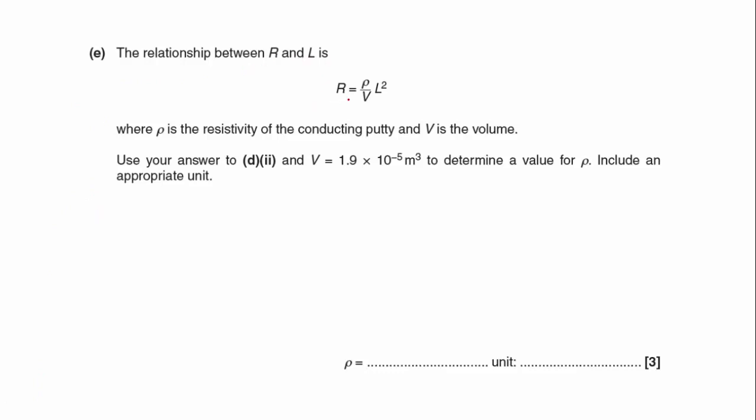The relationship between R and L is R equals rho V over L squared, where rho is the resistivity of the conducting putty, and V is its volume. So use your answer to D part 2, which was the gradient of the line, which I said was 6450 ohms per meter squared, and V as 1.9 times 10 to the minus 5 meters cubed, to determine a value for rho, including an appropriate unit.